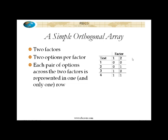It's pretty much that simple. So this is the simplest possible orthogonal array right here. It doesn't get any simpler. We've got two factors — factor one and factor two. Now each of those factors has two options: zero and one.